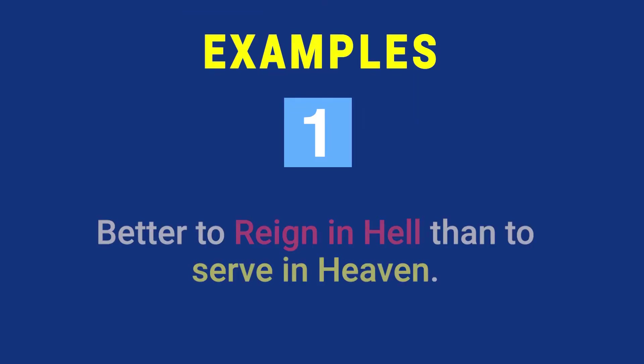Example number one: 'Better to reign in hell than to serve in heaven.' In this sentence, reigning in hell is contrasted with serving in heaven. Word-wise, reigning is opposite to serving and hell is opposite to heaven. So there is a perfect balance although there is opposition in terms of ideas and words, making this an antithetical statement.